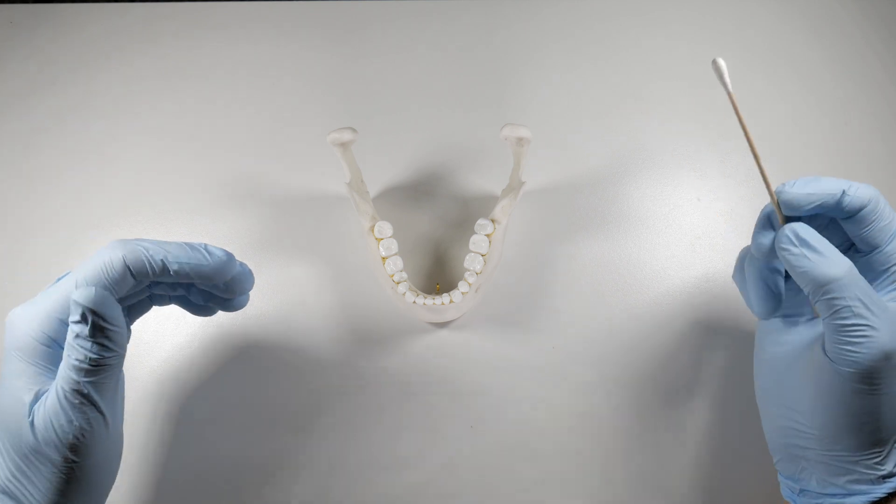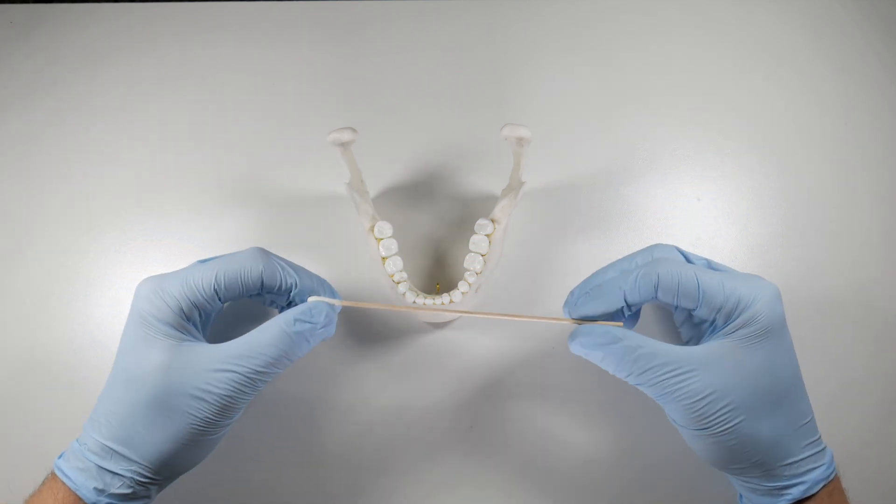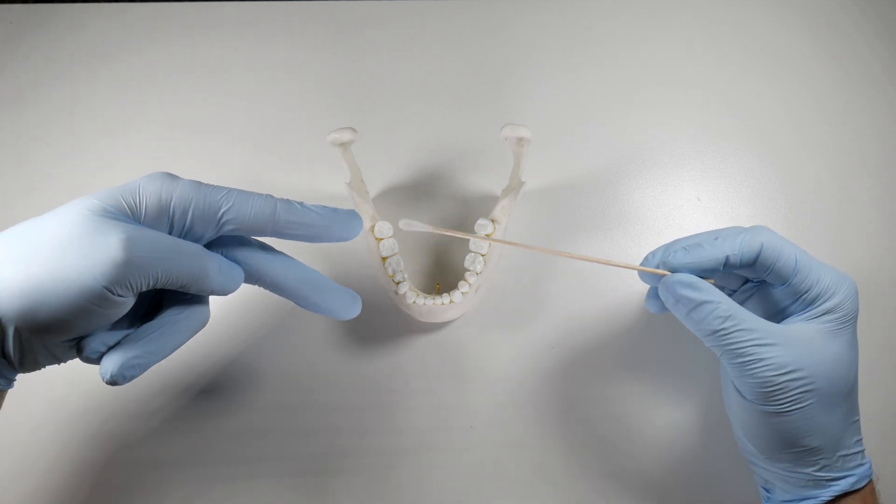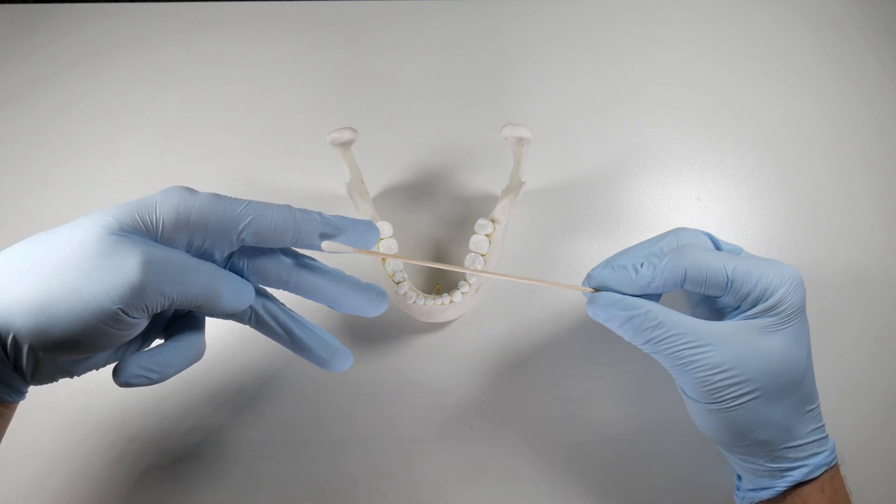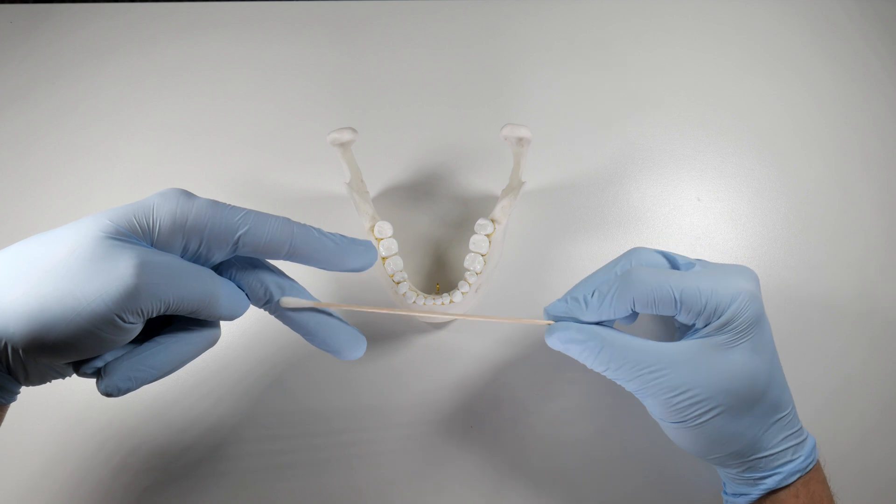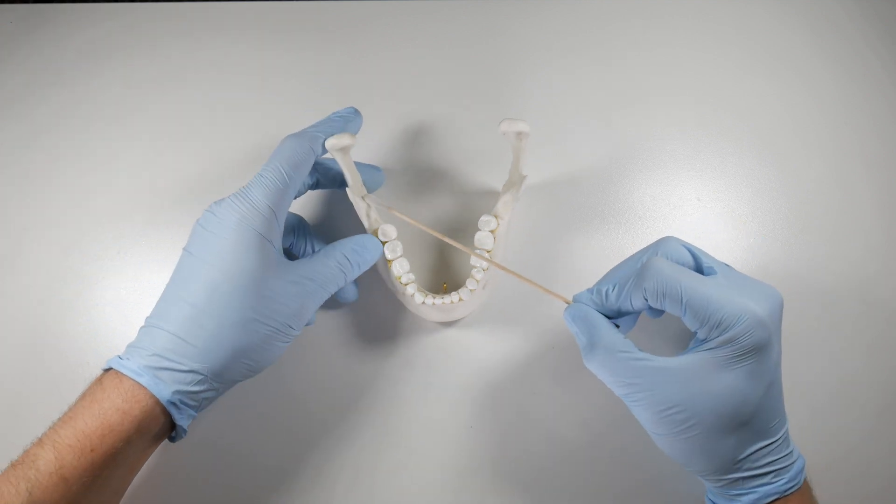The third thing to look at is when you have a panoramic radiograph. Sometimes you're going to see that there's not one canal but there's actually two or maybe even three. Three is very rare. You'll see doubles more than you'll see triples, so you'll see a bifid IAN canal that actually splits somewhere in the posterior region.